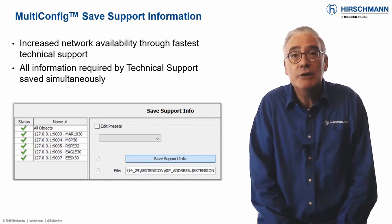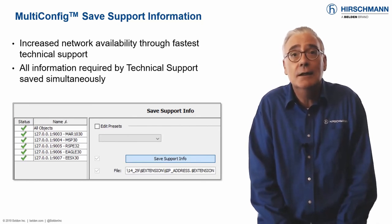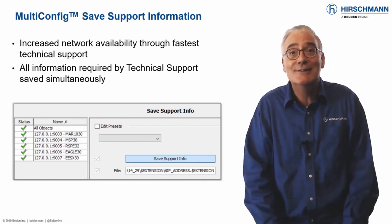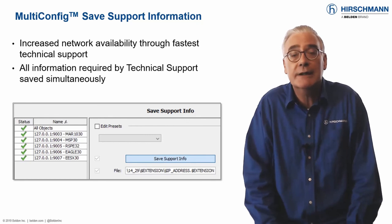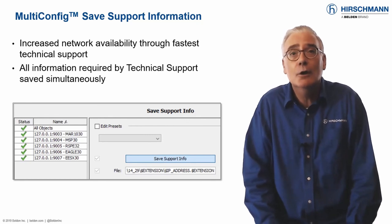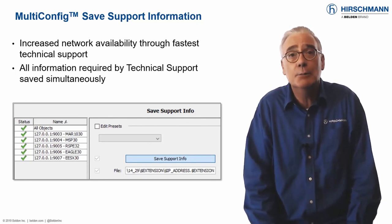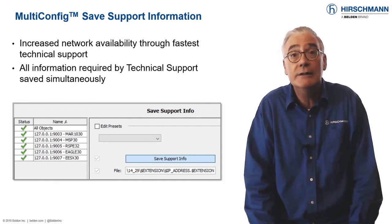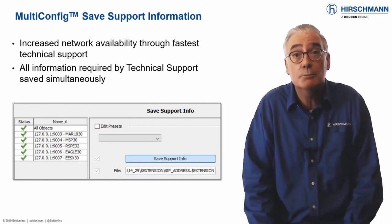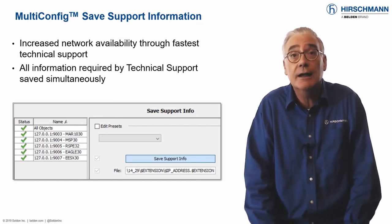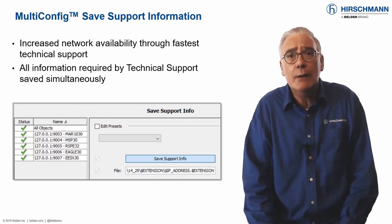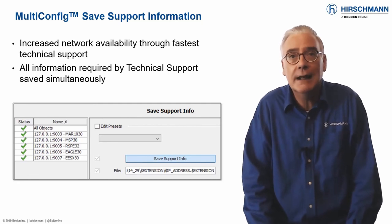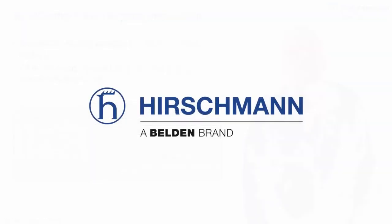You could manually collect the information from each device, which would be stressful during a fault situation. Or you could use the multi-config save support information option. With a couple of clicks, all the required support information will be downloaded from your switches to your Industrial HiVision PC, then zipped into an archive ready to be forwarded to our help desk. This enables the technician to start work on your network issue with the minimum of delay.